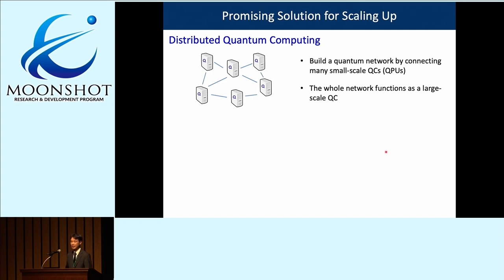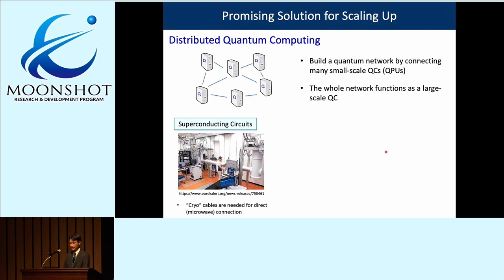In distributed quantum computing, one constructs many small-scale quantum processing units (QPUs) and connects them together to form a quantum network, which functions as a large-scale quantum computer. If one considers implementing distributed quantum computing using superconducting circuits or other solid-state platforms, the big technical challenge is that connection cables must be cooled down because they carry microwave photons, requiring millikelvin temperatures to preserve quantum coherence.